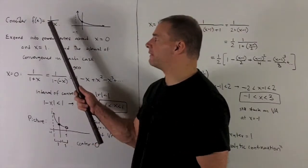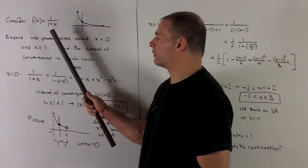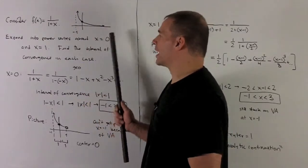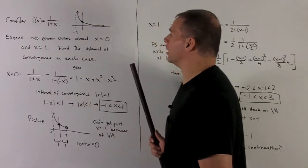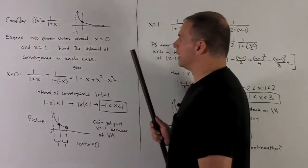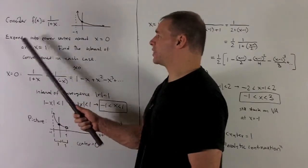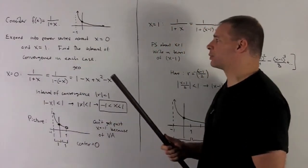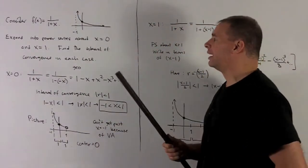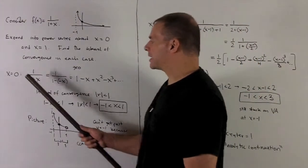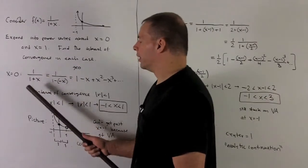Let's consider the function f(x) equal to 1 over 1 plus x. This is just the function 1 over x shifted to the left by 1. The problem is going to be: expand this into power series about x equals 0 and x equal to 1, and then find the interval of convergence in each case.